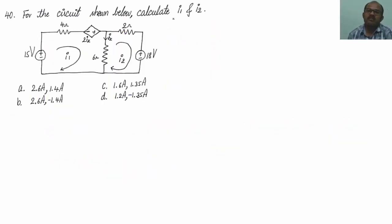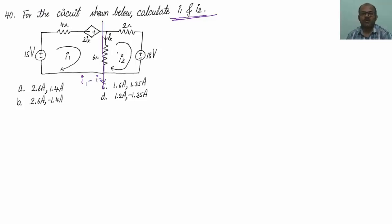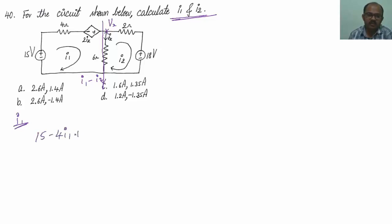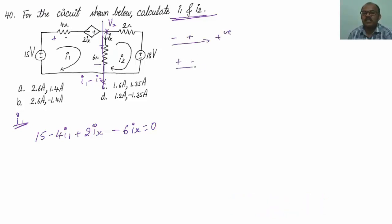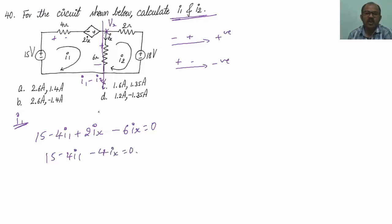For the last question, we have to calculate the values of I1 and I2. This current is I1 minus I2 because I1 is the downward current and I2 is the upward current, so the effective current flows downwards. Let me consider this node to be Vx and apply KVL. Applying KVL for the loop I1, I will be getting: 15 minus 4 times of I1 plus 2 times of Ix plus Ix minus 6 times of Ix equals 0. Simplifying: 15 minus 4 times of I1 minus 4 times of Ix equals 0.